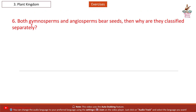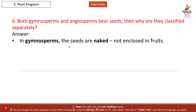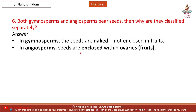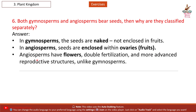Question 6: Both gymnosperms and angiosperms bear seeds — then why are they classified separately? Answer: In gymnosperms, the seeds are naked, not enclosed in fruits. In angiosperms, seeds are enclosed within ovaries (fruits). Angiosperms have flowers, double fertilization, and more advanced reproductive structures, unlike gymnosperms.